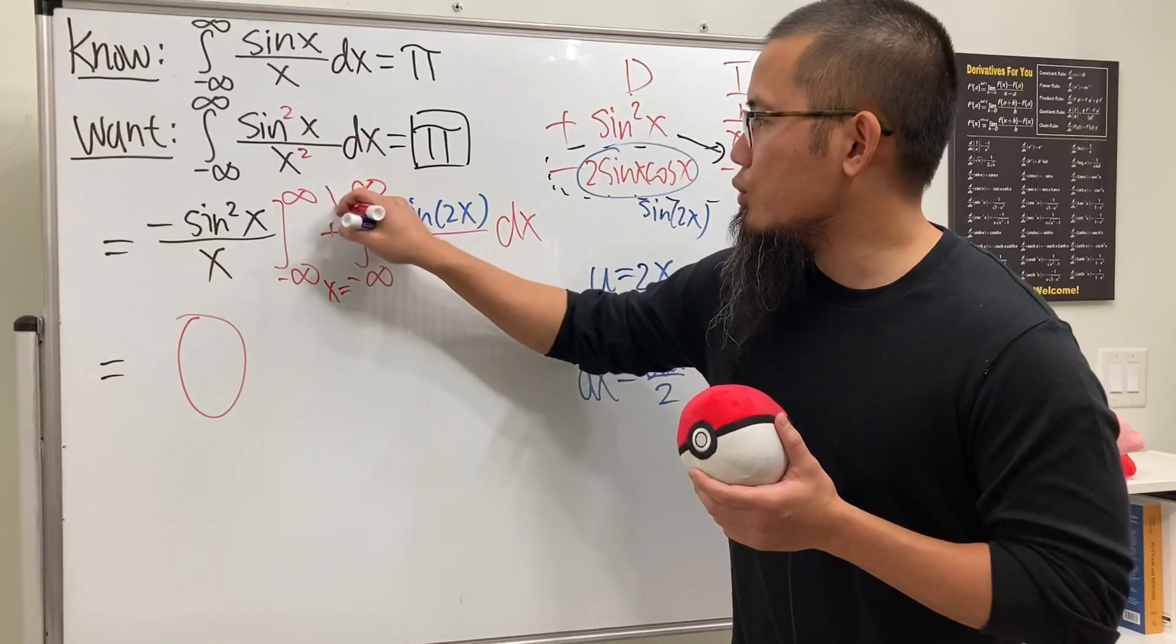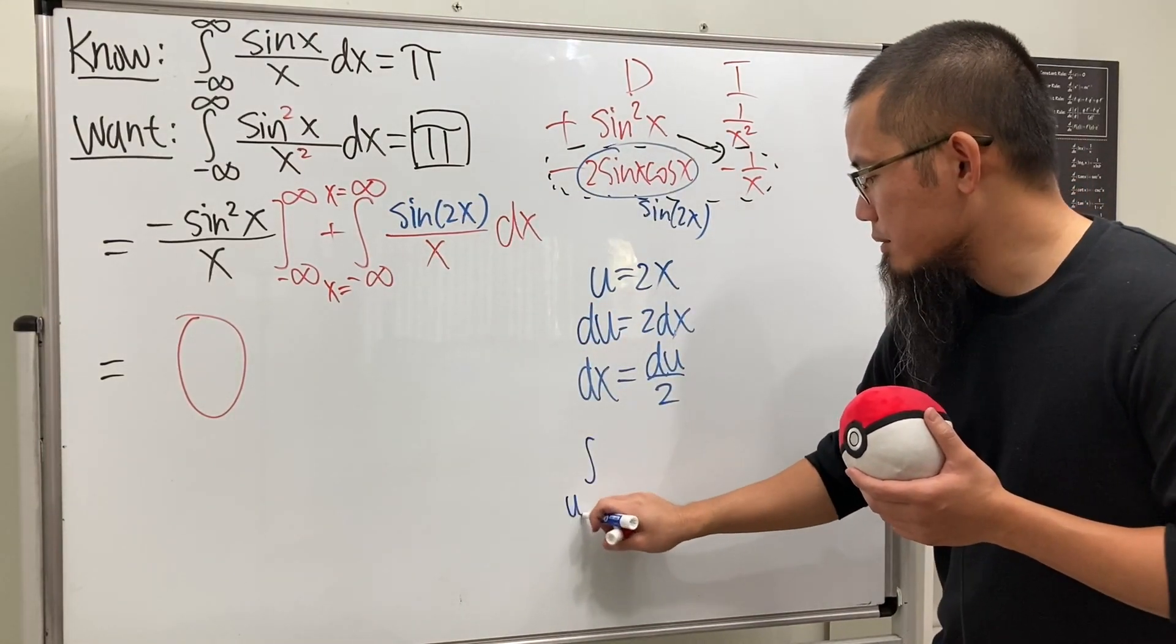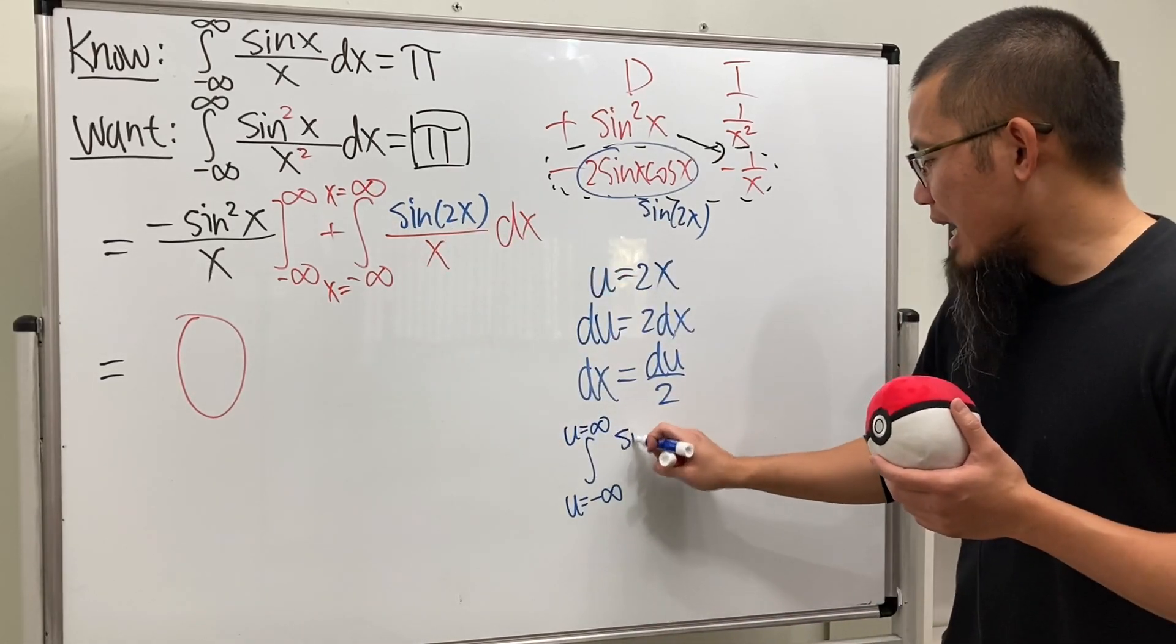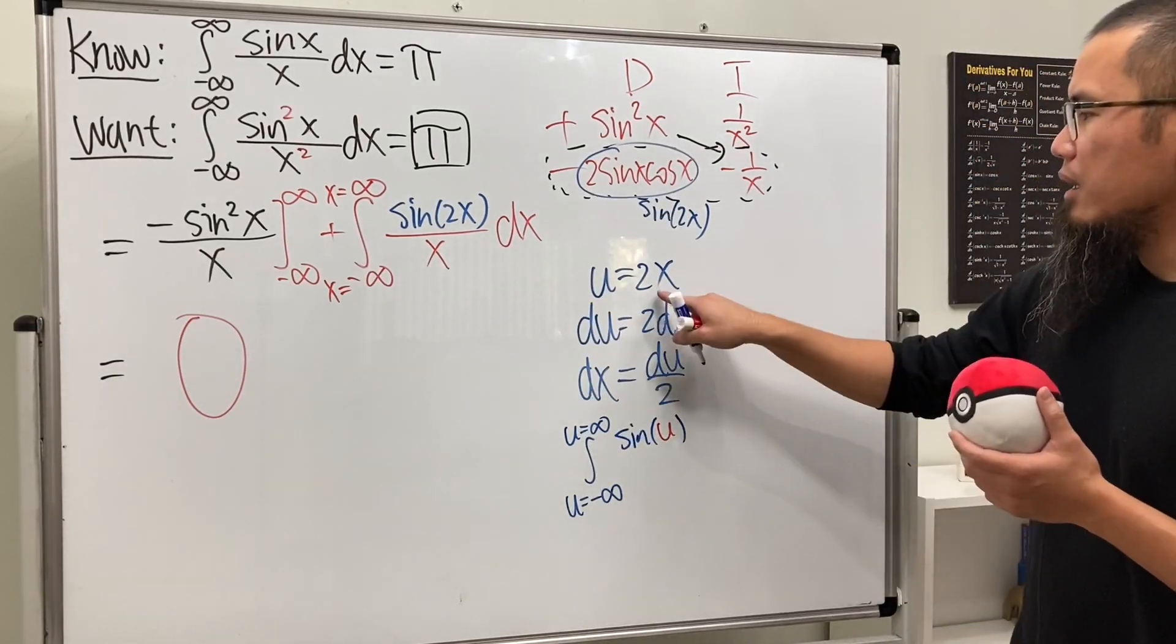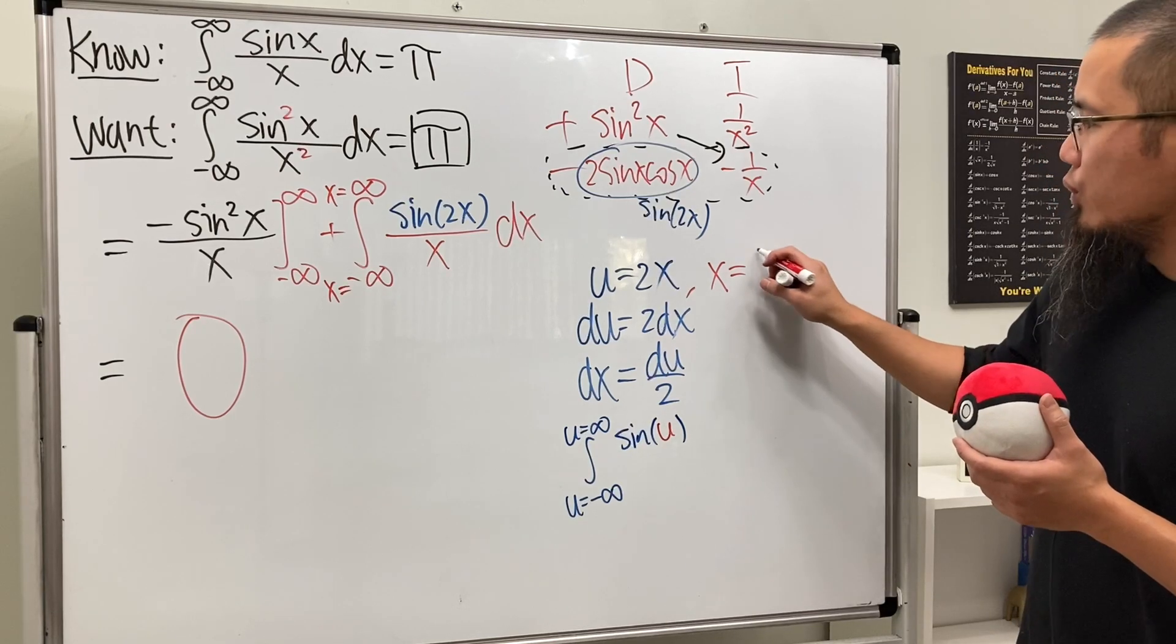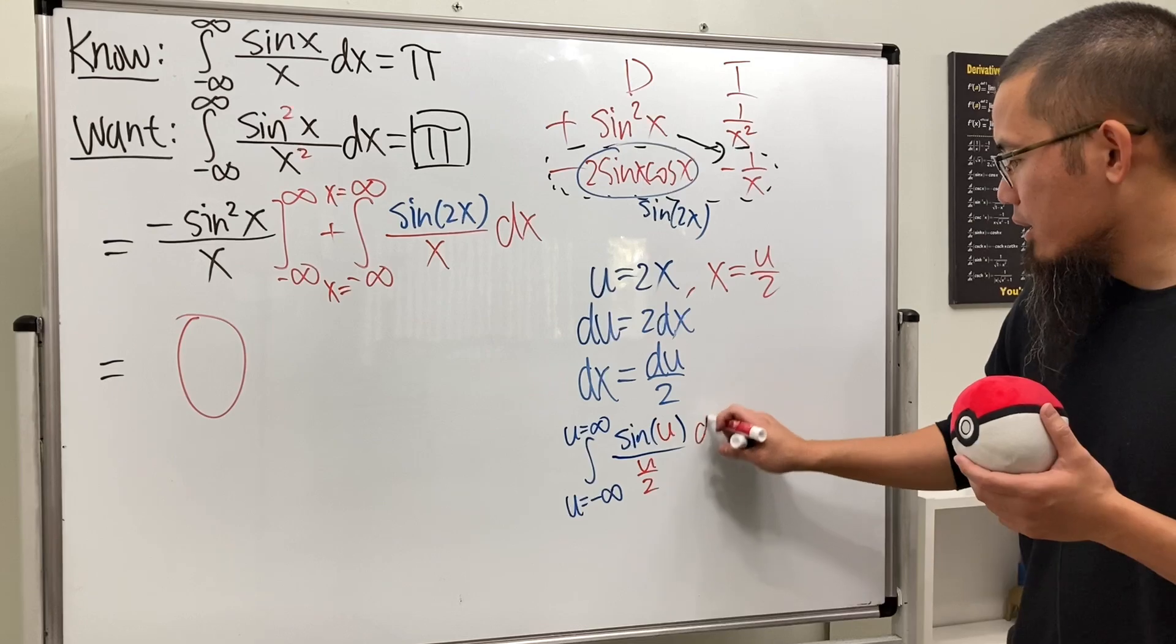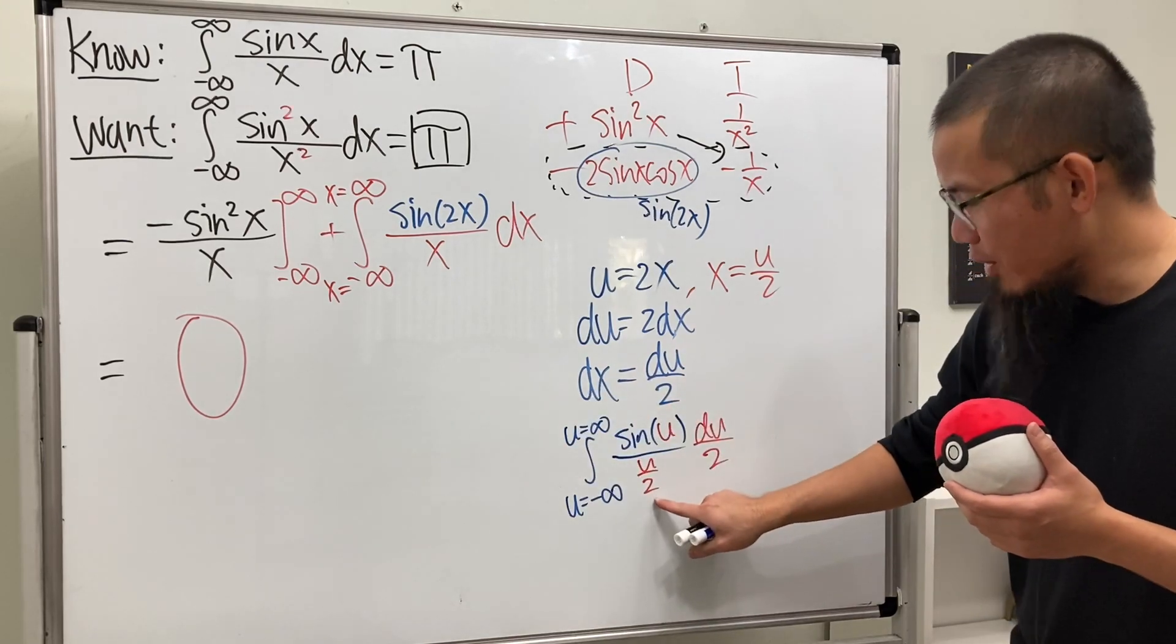And now take this integral to the u world. You see, x is going from negative infinity to positive infinity. If you take this and put it here, you will also go from negative infinity. You put infinity here times 2, you will still be going to infinity as well. Here we have sine and then the input is u. u is equal to 2x, so we can just divide both sides by 2. We can say x is just equal to u over 2, so we can have u over 2 here. And then dx is just du over 2, so let's put that down, du over 2.